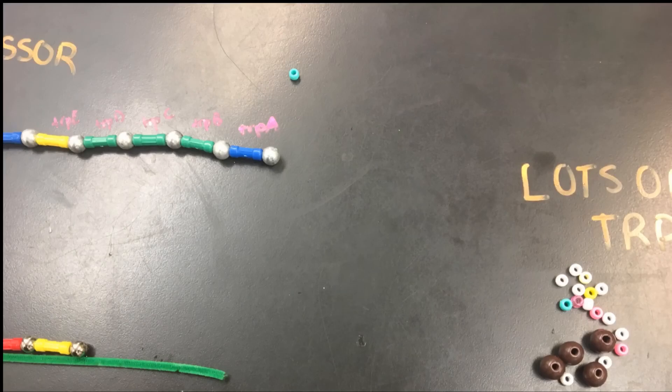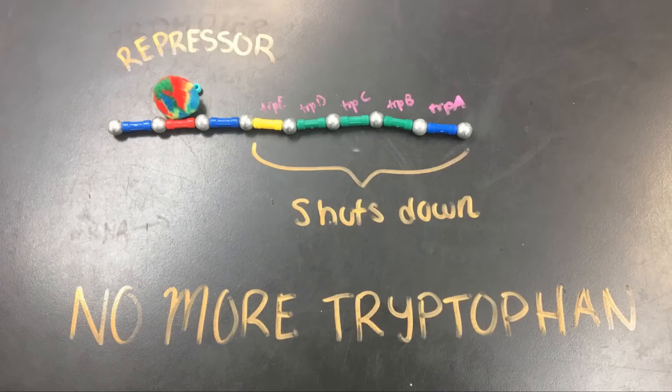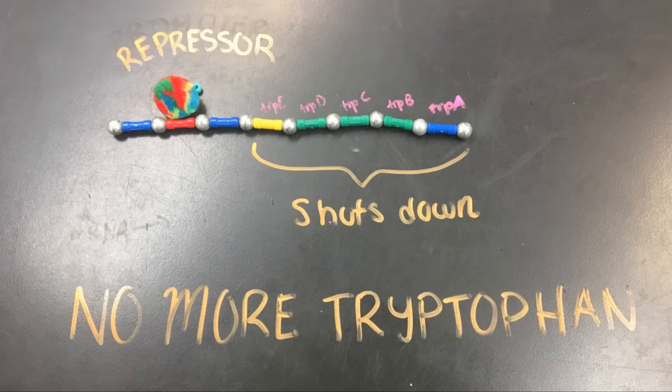Then a tryptophan molecule will bind to the repressor located on the gene, which shuts down the rest of the gene. This is an example of a negative feedback loop, and no more tryptophan will be produced until the tryptophan that's present is used.